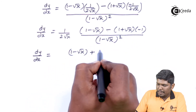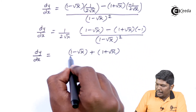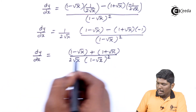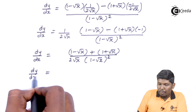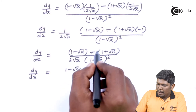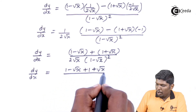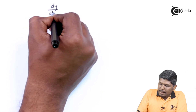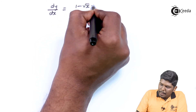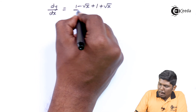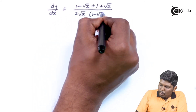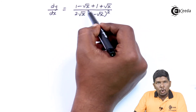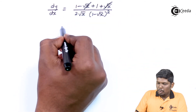The minus-minus becomes plus, so the numerator is (1 - √x) + (1 + √x), divided by 2√x into (1 - √x) squared. Simplifying: 1 - √x + 1 + √x. The -√x and +√x cancel each other, and 1 + 1 gives 2.